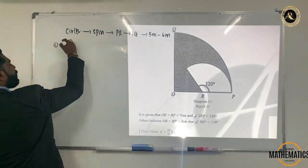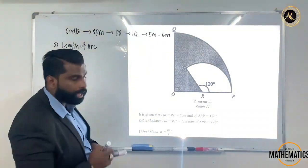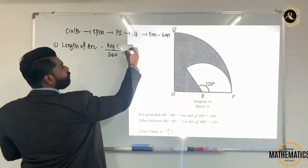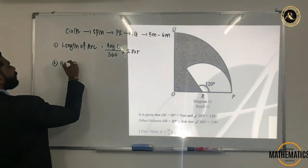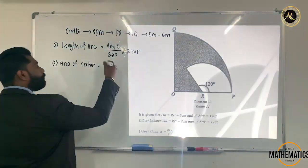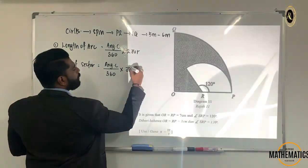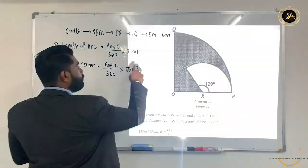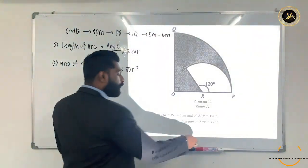What you need to know: first, the formula for length of arc — in Malay, we call it 'panjang lengkok.' The formula is: angle at center over 360, times 2πr. The second formula is area of sector — in Malay, 'luas sektor.' The formula looks similar but is not the same: angle at center over 360, times πr². For length of arc, the circumference part is 2πr; for area, it is πr².